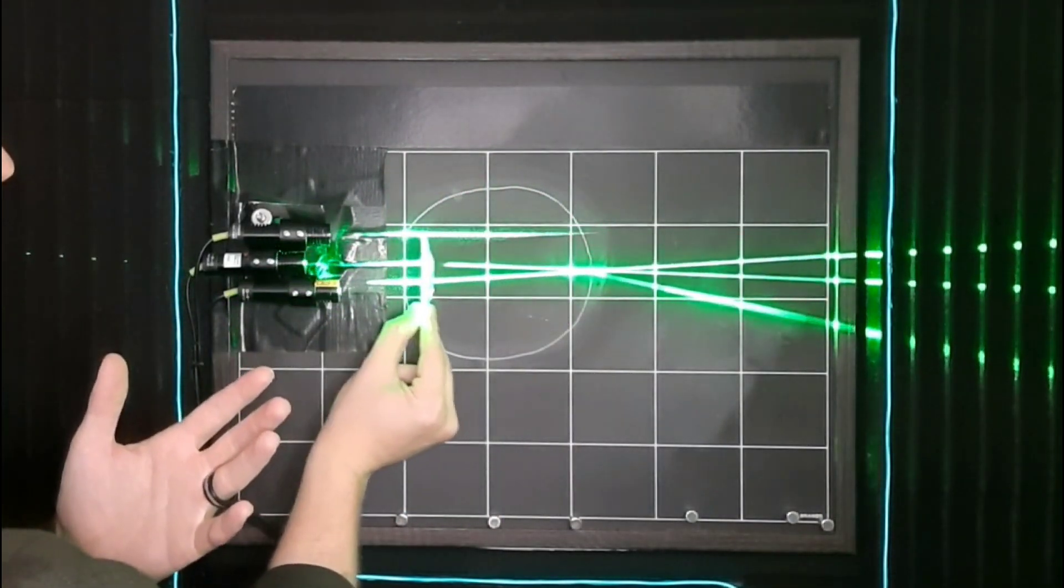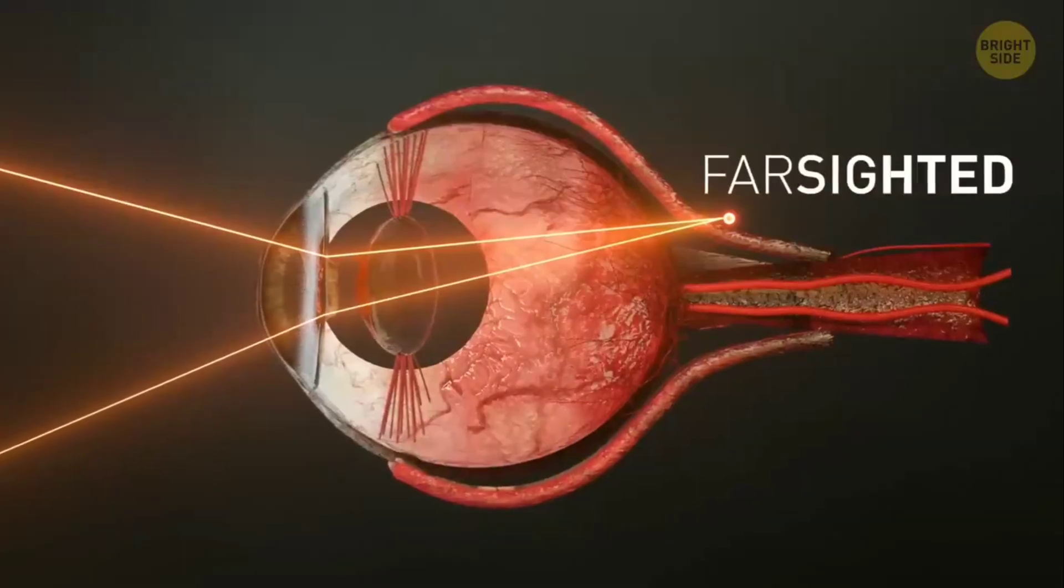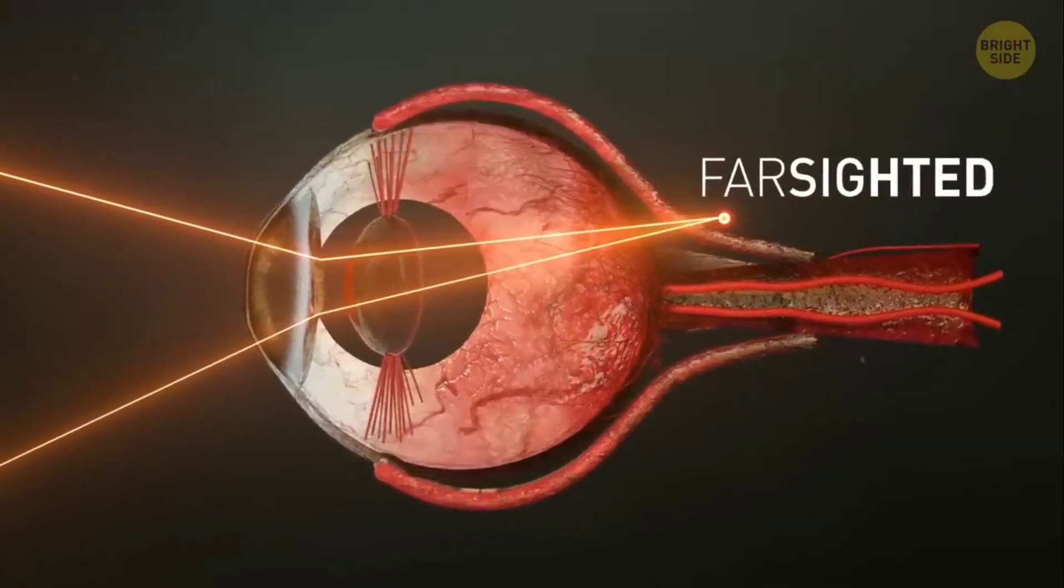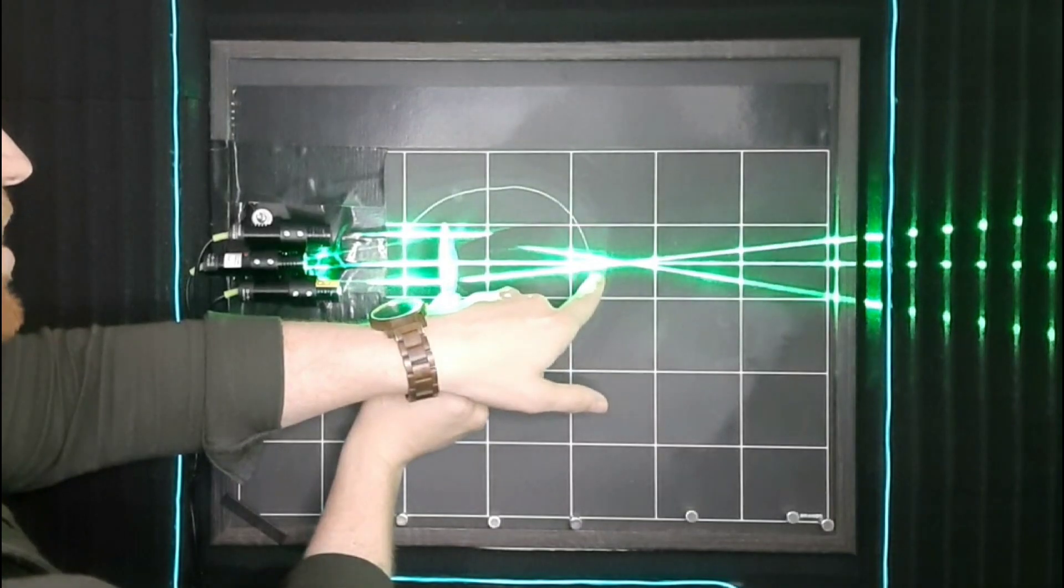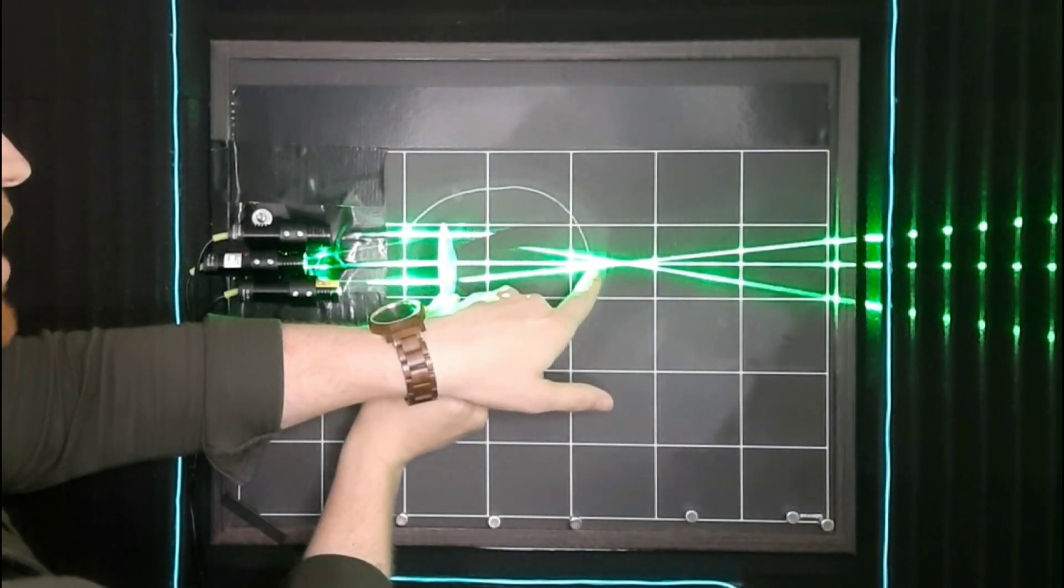On the other hand, your eye could also be farsighted, meaning that the light is trying to focus after your retina, so once it hits there it hasn't quite come to a point of focus yet and so the lines are more spread out. In both cases it makes your vision more blurry.